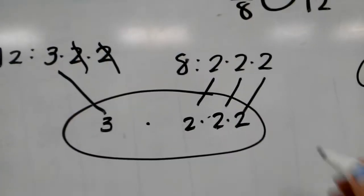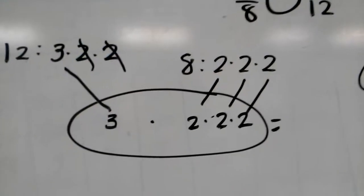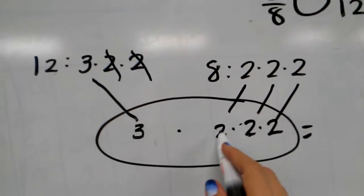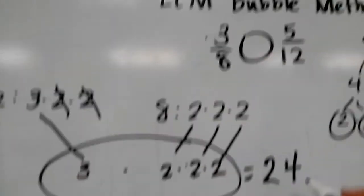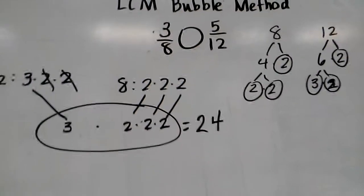I multiply the numbers in the bubble to find my lowest common multiple. 3 times 2 is 6, 6 times 2 is 12, 12 times 2 is 24. 24 is my lowest common multiple.